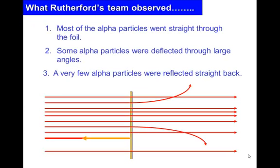What actually happened was something completely different. One, most of the alpha particles went straight through the foil. Two, some of the alpha particles were deflected through a large angle. And a very few of the particles were reflected back again. So this was a set of findings quite unlike what was expected if the accepted theory of the time was correct.